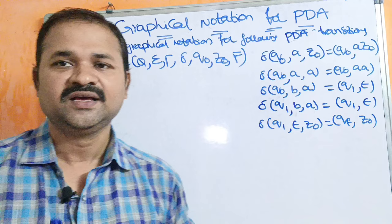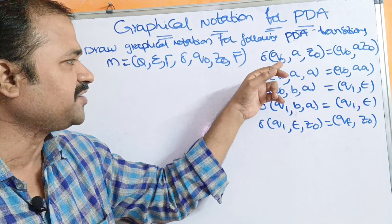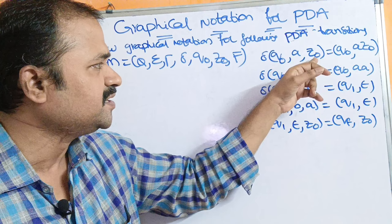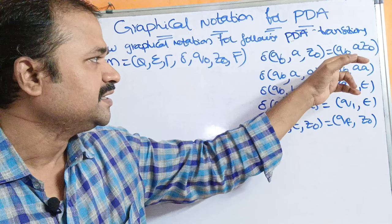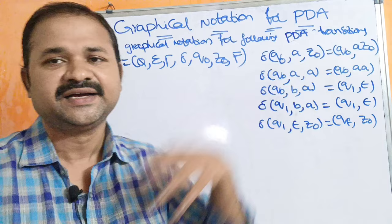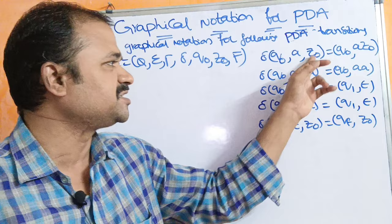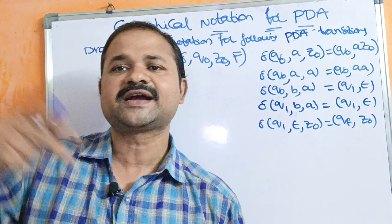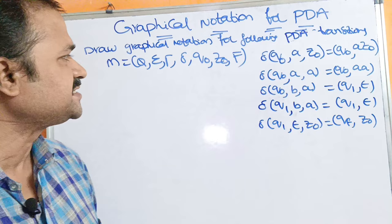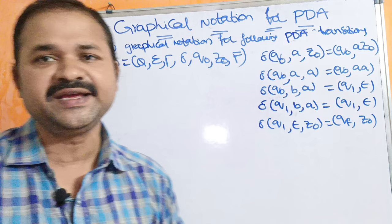Next is delta, which is a transition function. This transition function mainly contains 3 arguments: the first argument is current state, the second argument is input alphabet symbol, and the third argument is the stack's top symbol. The result is the destination transition. Q0 is the initial state, and Z0 is the topmost element present in the stack. F means set of final states.